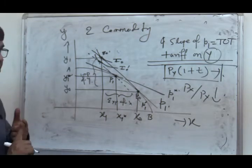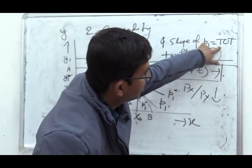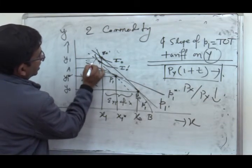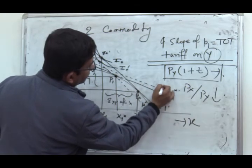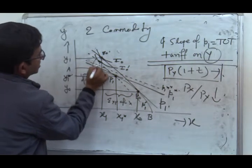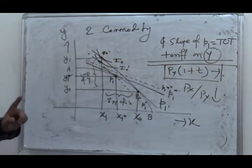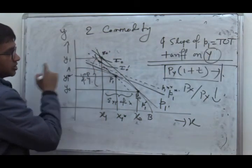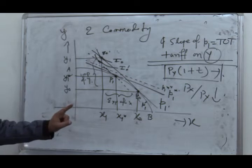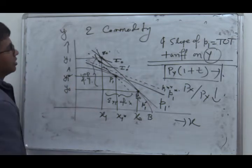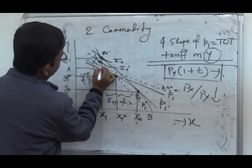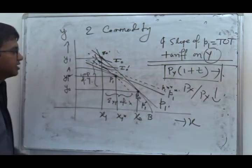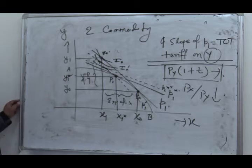Even if exchange is allowed at international terms of trade after changing the production point, the new equilibrium on I0 dash would still not be the consumption equilibrium. This is because, though from the international market the terms of trade apply, the domestic market faces a different terms of trade, represented by the line P1 star star, which is parallel to P1 star. Equilibrium is attained where P1 dash and P1 double star intersect.